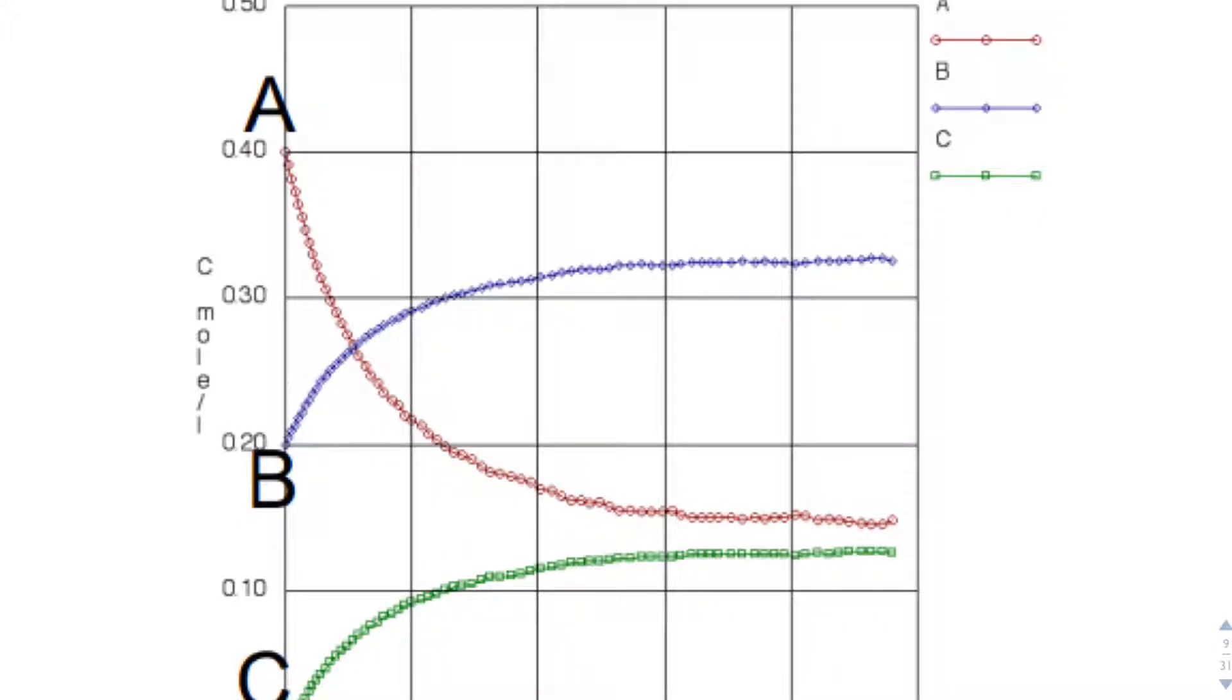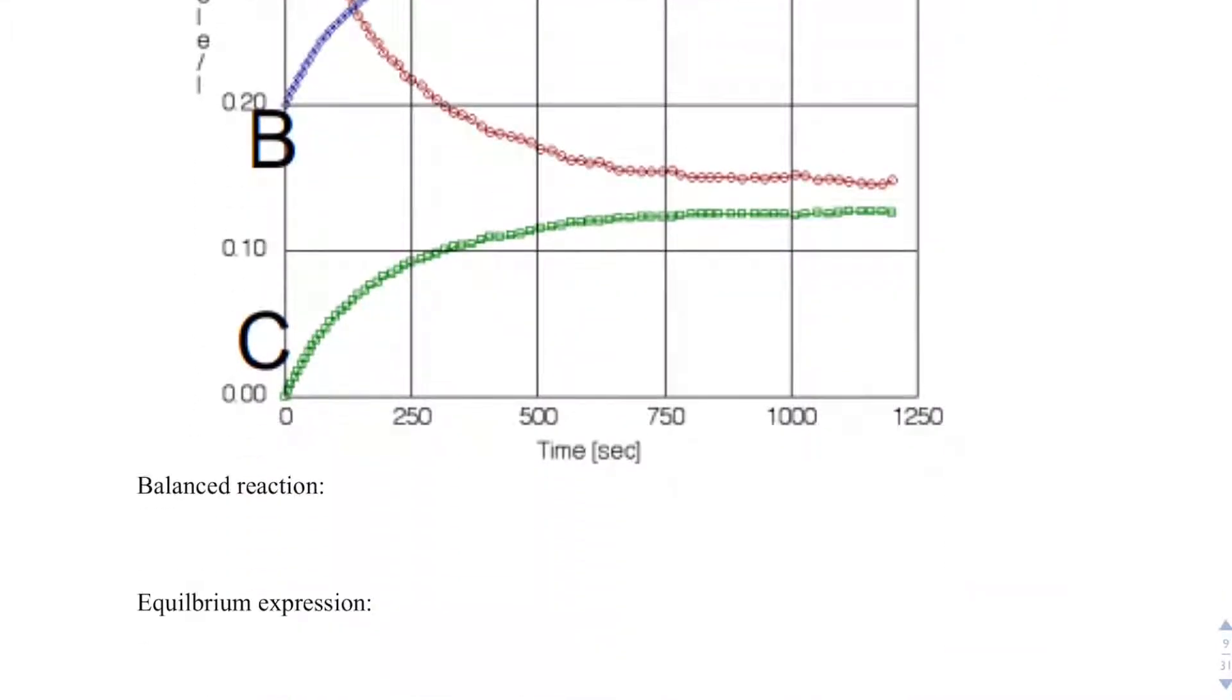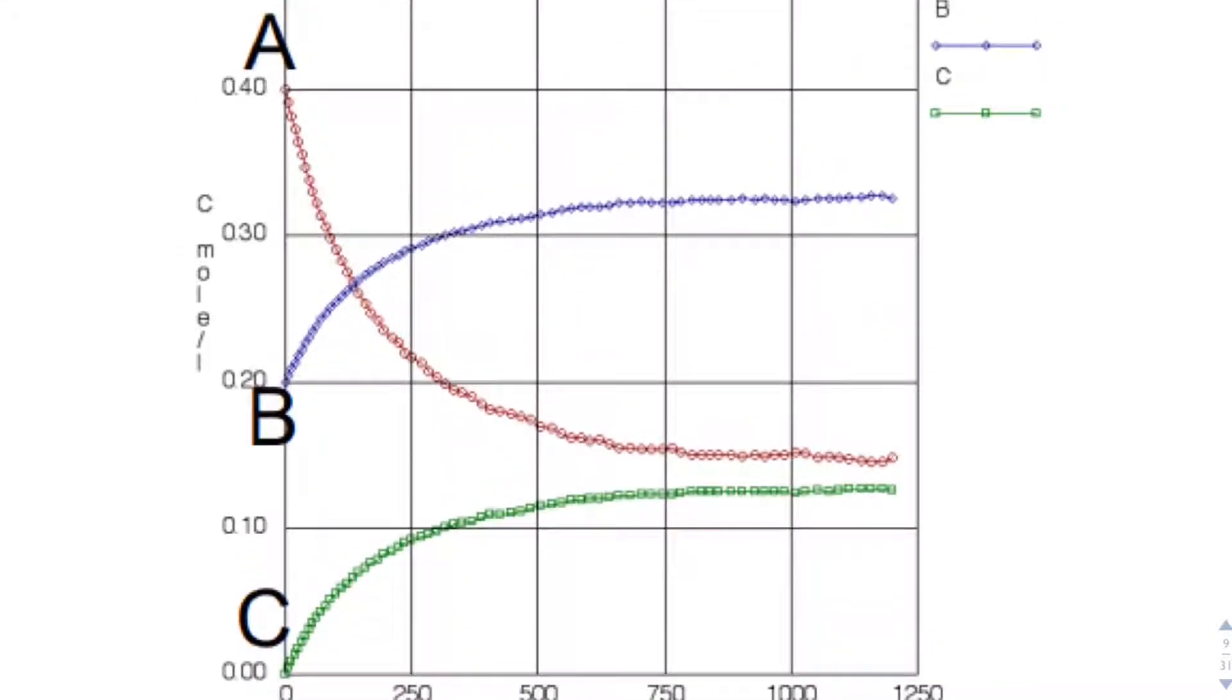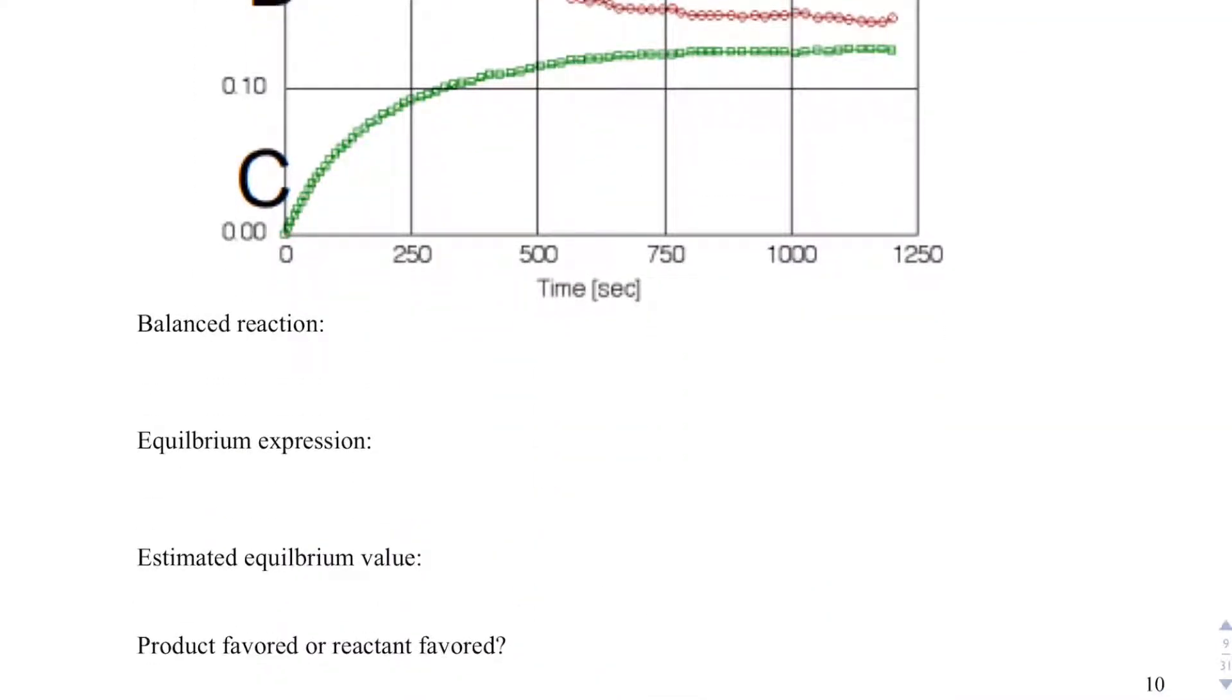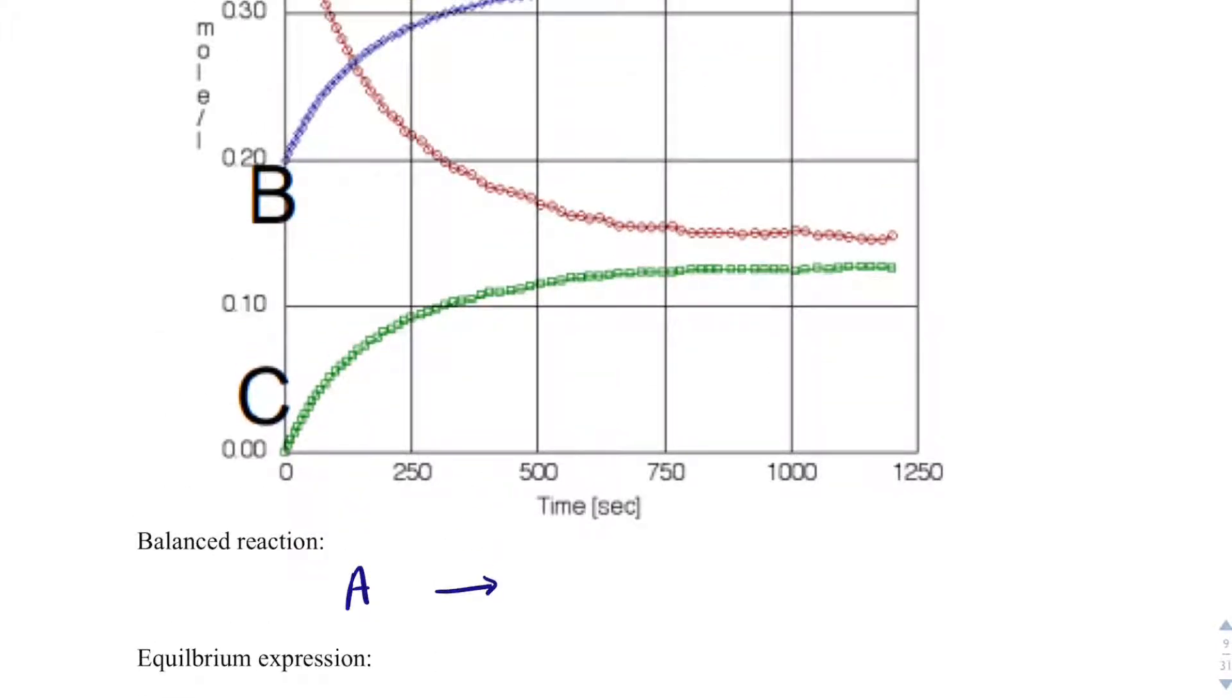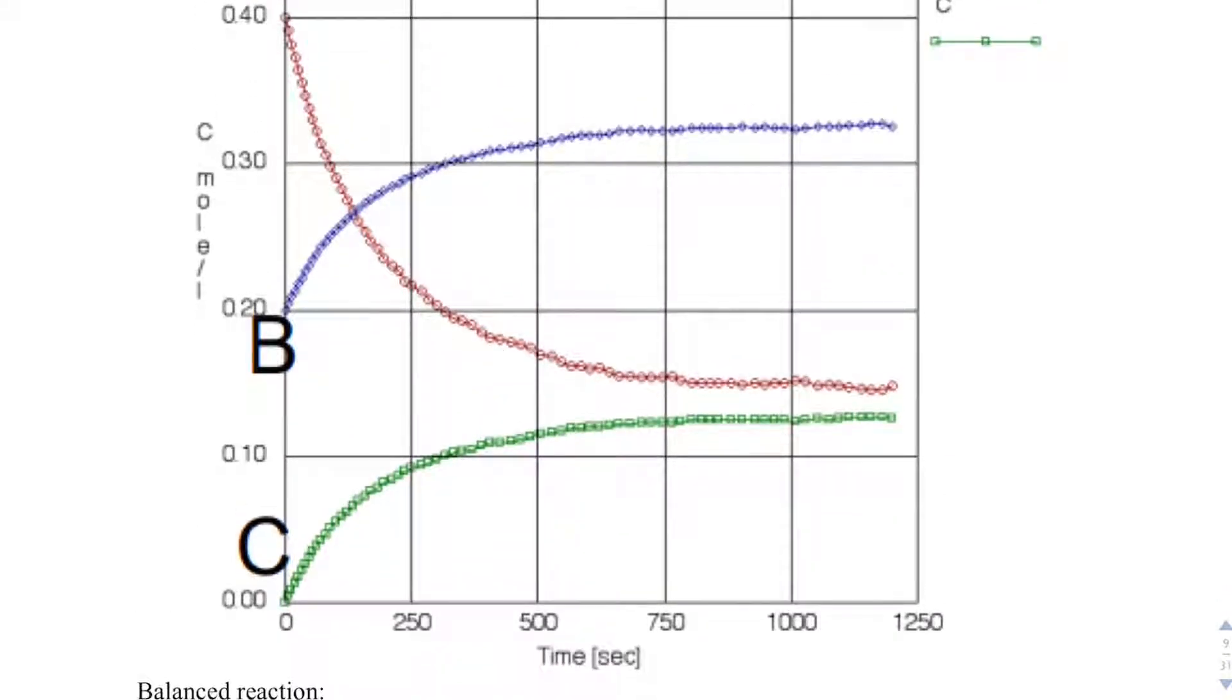The first thing I want to talk about is getting the balanced reaction. I know A has to be a reactant because it decreases over time. So I can say A is going to form B and C. I do not know the coefficients just yet. What I do know, though,